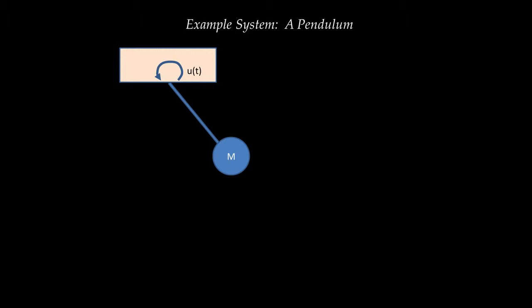I'm interested specifically in the angle between the pendulum and the vertical, which I call Y of T. Recalling from the previous tutorial, there are five steps to developing a state-space representation. The first step is to identify the inputs — the torque acting on the pendulum, U of T. The second step is to identify the outputs — the angle between the pendulum and the vertical, Y of T.